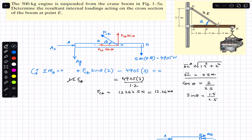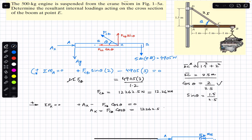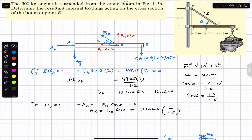Now to find Ax, we apply the sum of forces in the x-direction equal to zero, with rightward as positive. Ax acts in the positive x-direction and the cosine component of FCD acts in the negative x-direction, so: Ax minus FCD cos θ equals zero. Therefore Ax equals FCD times cos θ, which is 12262.5 times 2/2.5, giving Ax equals 9810 Newtons, or 9.81 kilo-Newtons.